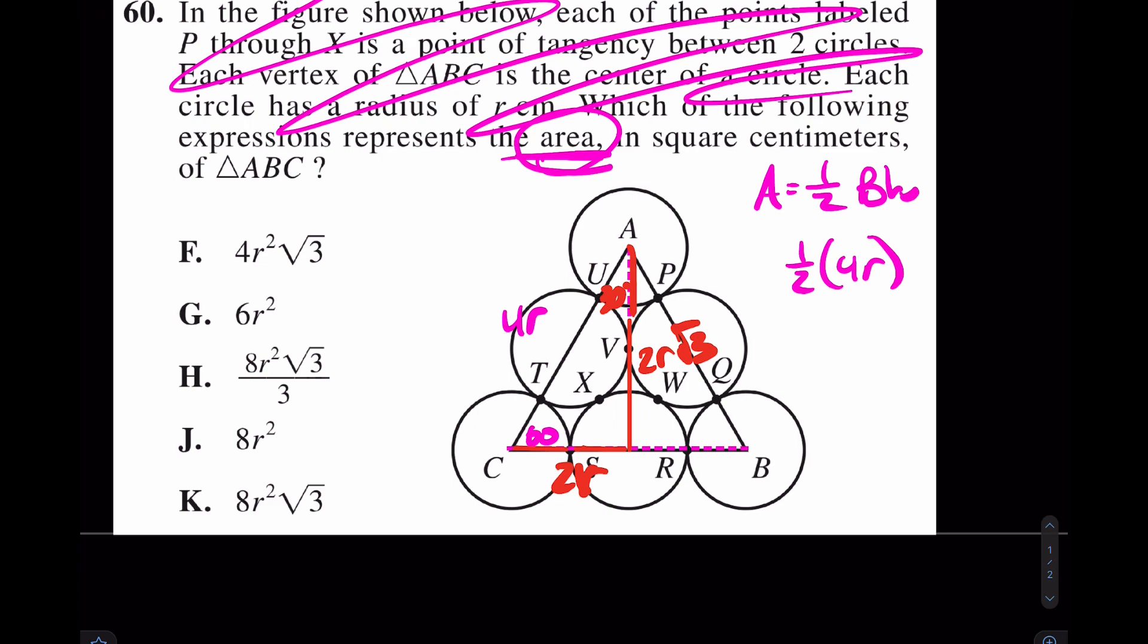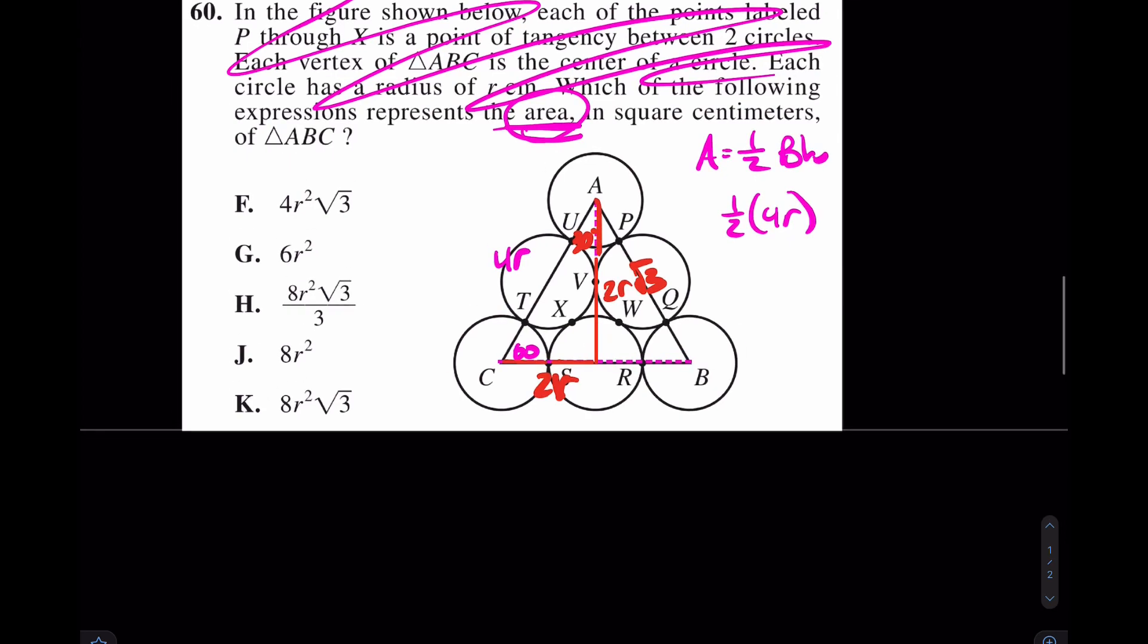Okay. Well, if that's the case, we're done. Because now we actually know this piece. We know the height was 2R root 3, at which point we're essentially done. What is the answer here? The answer is F. When you multiply this out, the 1 half and this 2 cancel perfectly, and we're done. The answer is going to be 4R squared root 3.